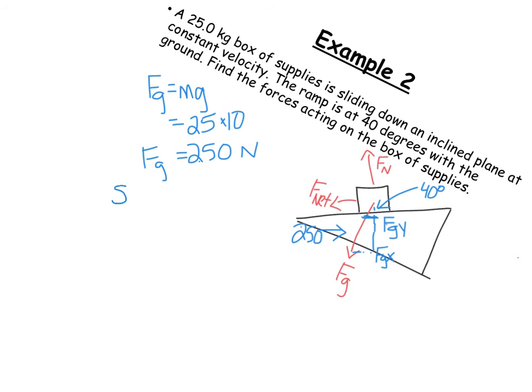Okay, so we've got sine of 40 degrees is equal to – and you see here's my 40 degrees, so opposite of it is going to be my F G X over my hypotenuse, which means that my F G X, which is equivalent, so my F net is equal to 160 Newtons.